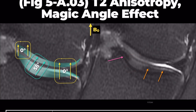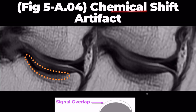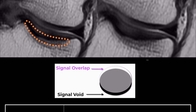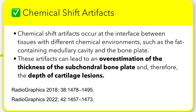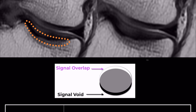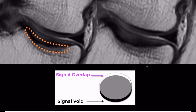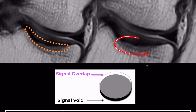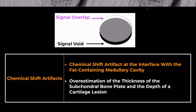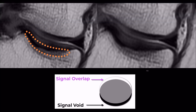Lastly, let's discuss chemical shift artifacts. These typically occur at the boundaries between different types of tissue. A common place we see this is at the interface between the fat-containing medullary cavity and the bone plate. Understanding these artifacts is crucial when determining the depth of cartilage lesions. The location of the subchondral bone plate is our key reference point, but defining this bone plate on MRI can be tricky. The anisotropic fibrous organization of articular cartilage makes it susceptible to both the magic angle phenomenon and those chemical shift artifacts at the fat-bone interface.